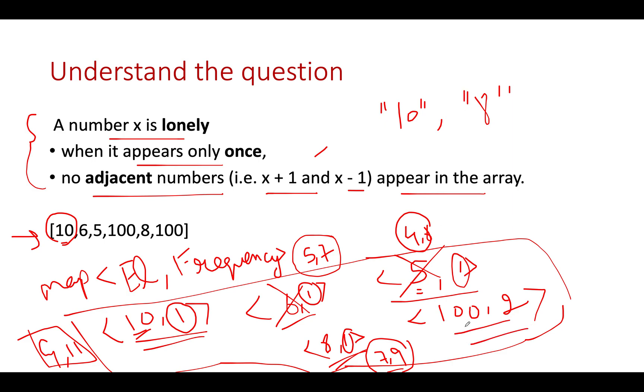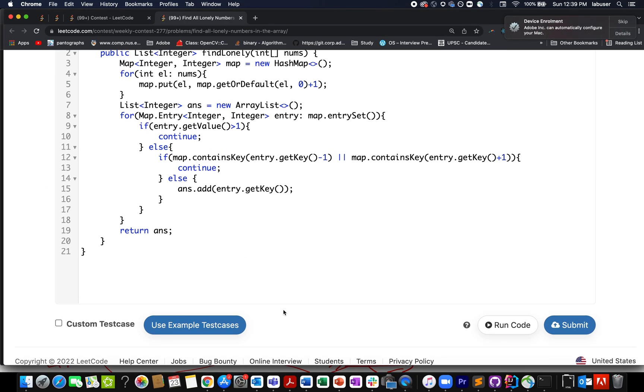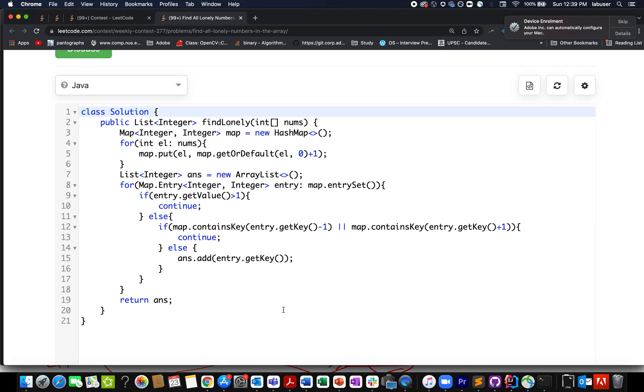The last element is 100 with frequency 2. The first constraint is violated. The answer is 10 and 8, which is the expected result. Let's walk through the coding section—I'll do the same steps discussed here.